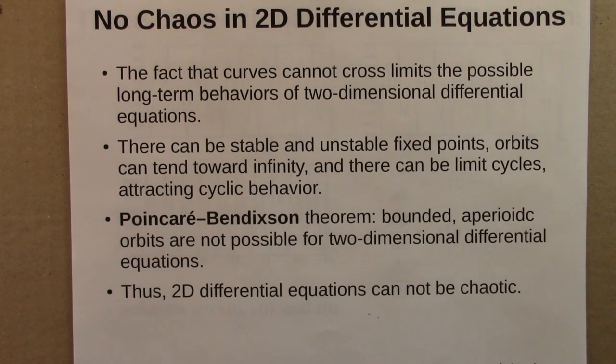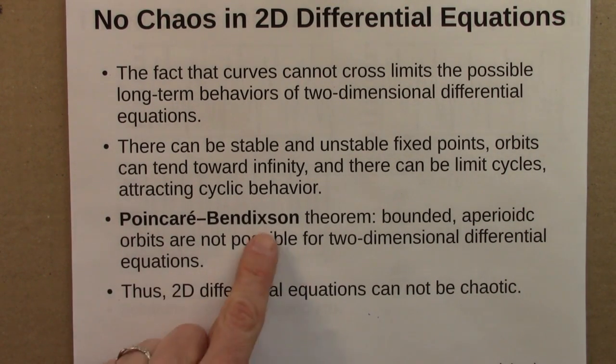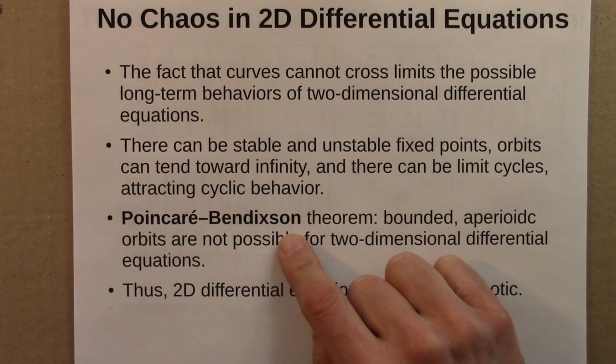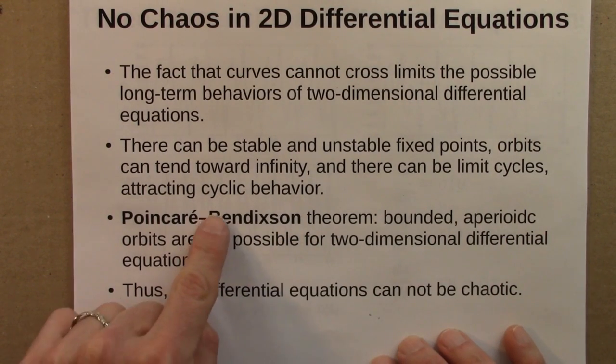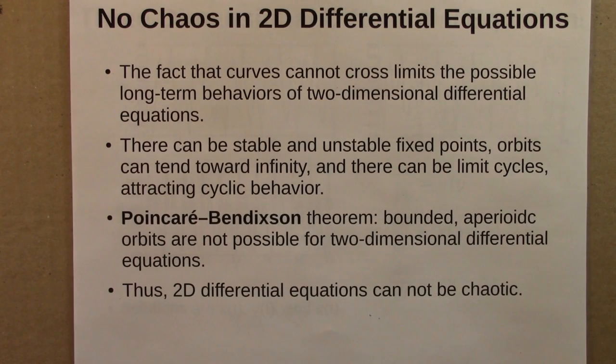So there can be stable and unstable fixed points, and orbits can tend towards infinity, of course, and there also can be limit cycles attracting cyclic behavior, and we saw an example of that. But the main thing is that there can't be aperiodic orbits. And that result is known as a Poincaré-Bendixson theorem. It's about a century old. And it's not immediately obvious. It takes some proof. Like I said, maybe that's why it's a theorem and not just an obvious statement. One could imagine, and people in the forums have been trying to imagine, space-filling curves that somehow never repeat, but also never leave a bounded area. But the Poincaré-Bendixson theorem says that those solutions somehow aren't possible. So the main result is that two-dimensional differential equations cannot be chaotic.